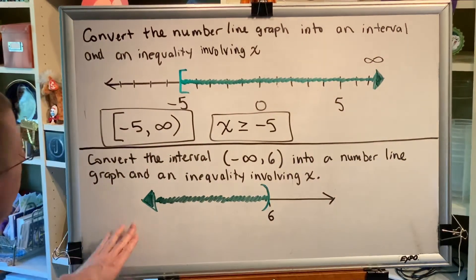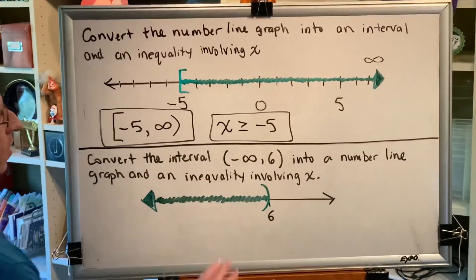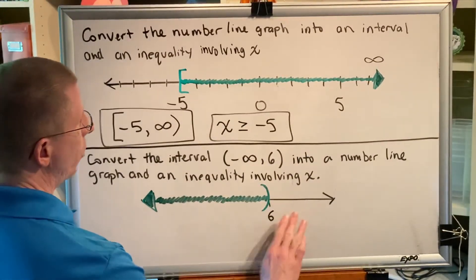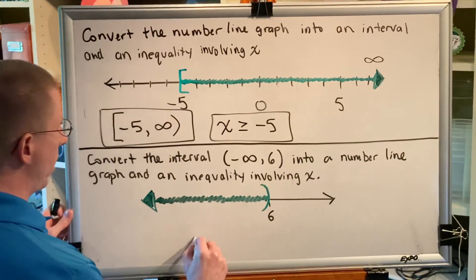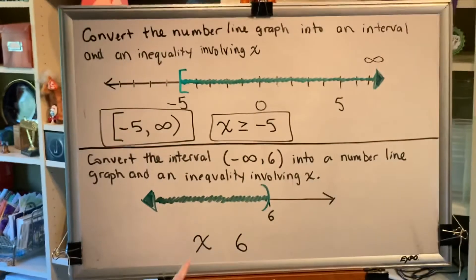All right, so we've made our graph. Now how about our inequality? Well, we notice that the dividing line between shaded and unshaded is 6. So our inequality is going to look like this: an x and a 6. We just have to decide what's the symbol that goes in between.